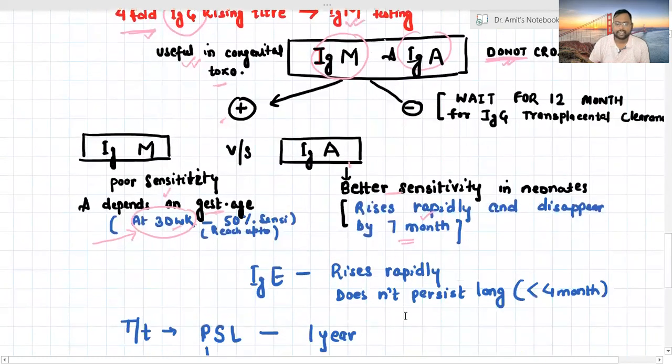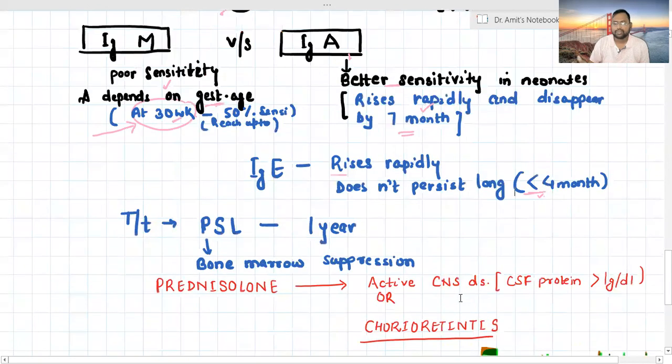Similarly, we have IgE. It rises rapidly and does not persist long. It also usually disappears by 4 months, whereas IgA disappears by 7 months. These tests can also be used. If you diagnose, you have to start treatment similar to the mother. PSL: we have to give pyrimethamine, sulfadiazine, and leucovorin or folic acid for one year. And you have to go for regular follow-up.